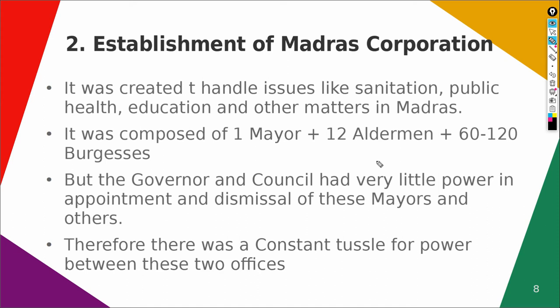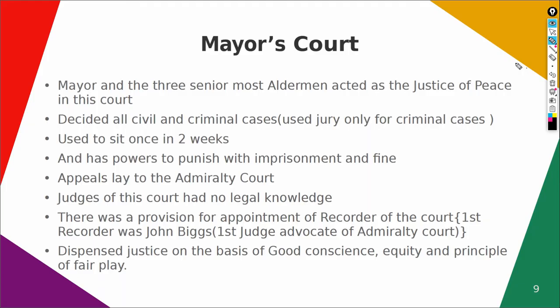If the Mayor, Aldermen, or Burghers were to be dismissed, the Governor and Council had to give proper reasons for the removal, otherwise they could not be removed. Furthermore, if the Mayor and others found that their dismissal was made in bad faith, they could appeal to higher authorities in England. This led to a huge friction and tussle for power between the Mayor and Aldermen on one side and the Governor and Council on the other. Later, another charter was passed which drastically reduced the powers of the Mayor and his court and increased the powers of the Governor and Council.